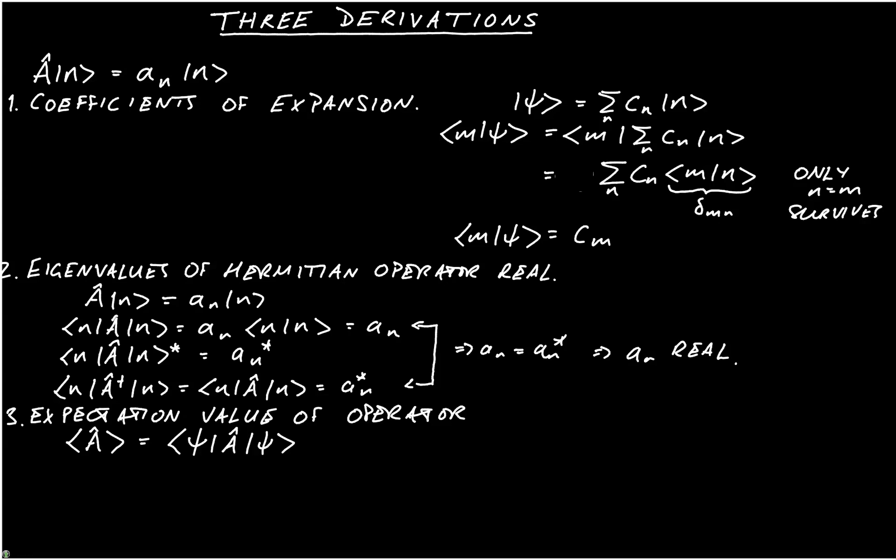As we have ψ defined above, we can work out A acting on |ψ⟩, which is just A acting on the sum over n of c_n |n⟩, which again is equal to the sum over n of c_n A acting on |n⟩, which is c_n a_n |n⟩.